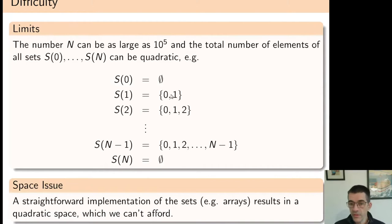For instance, if we first insert 0 and 1, and then 2, and then 3, and so on, and then we remove the elements only at the very last step, then we have a total number of elements which is quadratic.